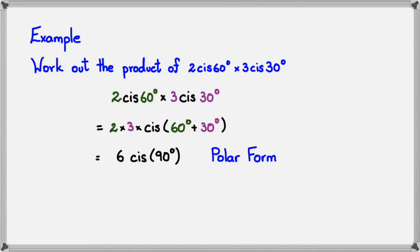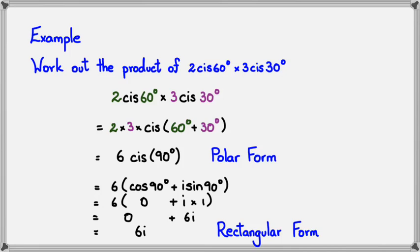And if we want to change this to rectangular form, we do what we did in our previous video, which is expand this, which would be 6 cos 90 plus i sine 90. Expanding this, we have 6 cos 90 would be 0, sine 90 would be 1, and so we'd get 0 plus 6i, or just 6i by itself, which is in rectangular form.